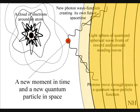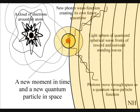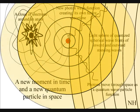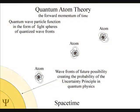This is because the process of time is created by a photon-electron coupling that expands as a quantum wave-particle function, as an inverse volume of space in the form of a light sphere of quantized wavefronts, creating the forward motion of time.